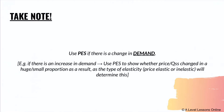Use PES only when there's a change in demand — this is the same logic as PED, which applies when there's a change in supply. If there's an increase in demand, the demand curve shifts outward, causing both price and equilibrium quantity to rise. PES helps determine whether the quantity supplied or price changed in a larger or smaller proportion in response.